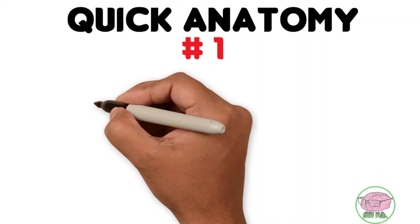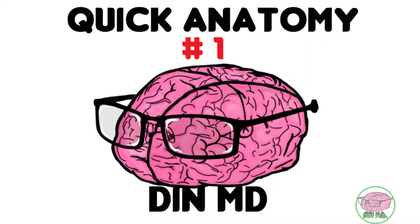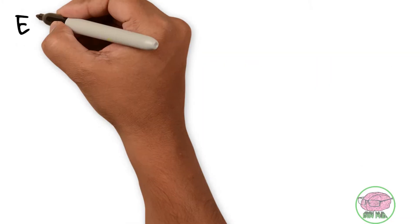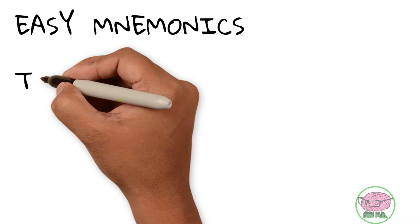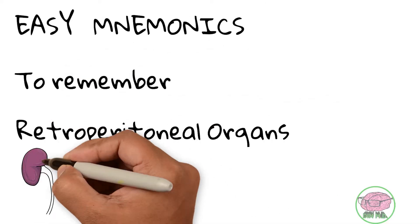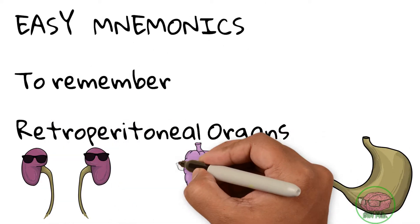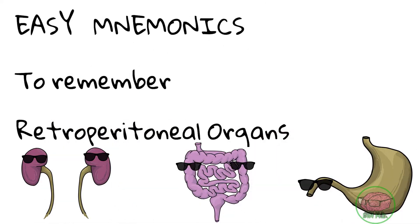Welcome to Quick Anatomy number one, created by Dinamd. In this video we'll learn easy mnemonics to remember the retroperitoneal organs — those organs that are behind the parietal peritoneum.